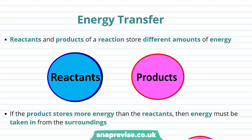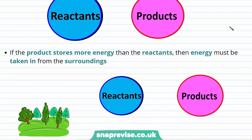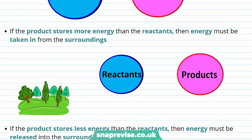In a chemical change, the particles that make up the reactants are broken up and rearranged in order to form the products. As a result of the chemical change, the reactants and products of a reaction will store different amounts of energy to each other. We can think about two different situations.